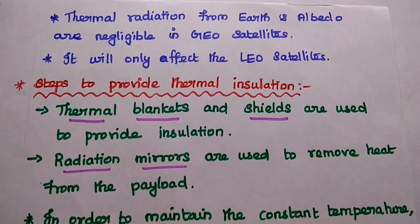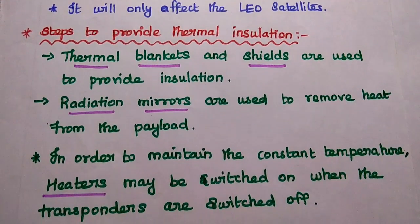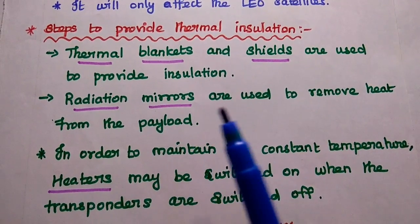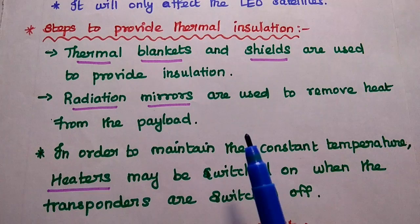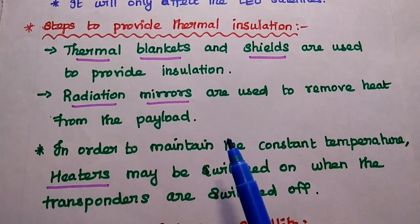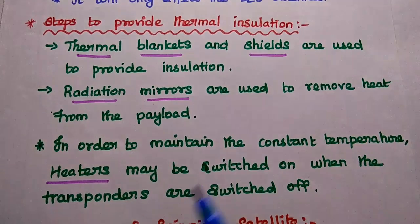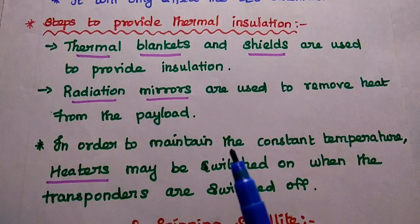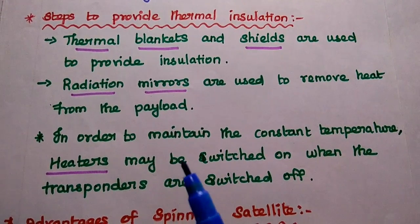Steps to provide thermal insulation to control temperature variations include using thermal blankets and shields to provide insulation from thermal gradients. Radiation mirrors are also used to remove heat from the payload. Within satellites, equipment generates thermal radiation that can be managed using radiation mirrors.